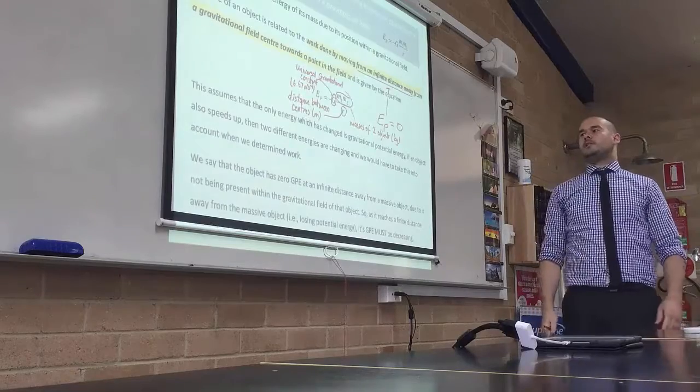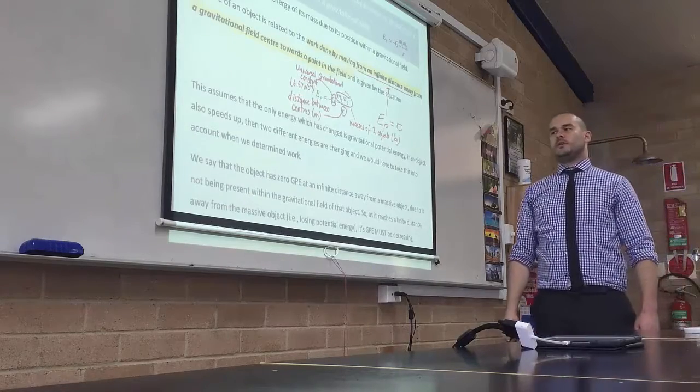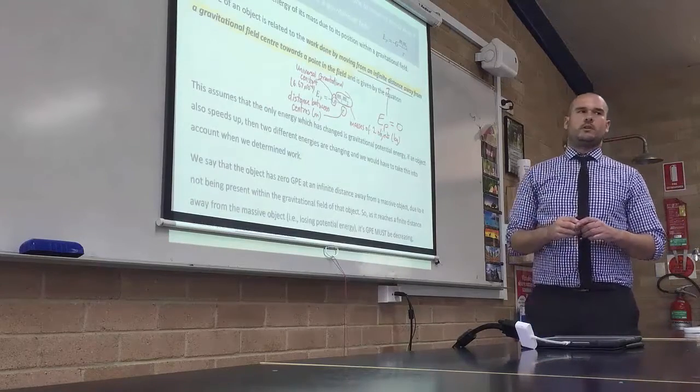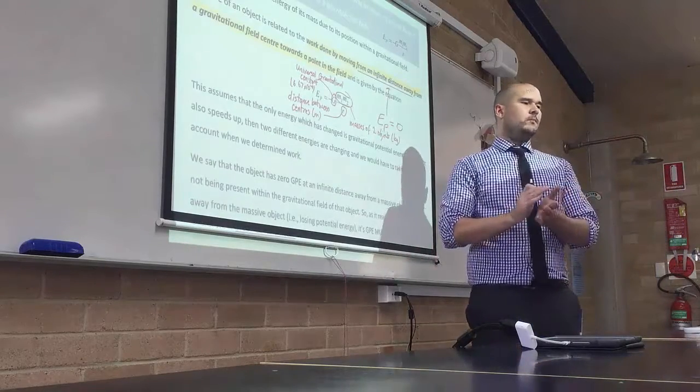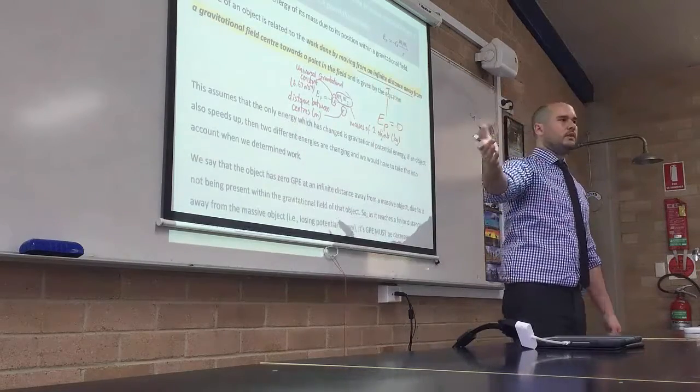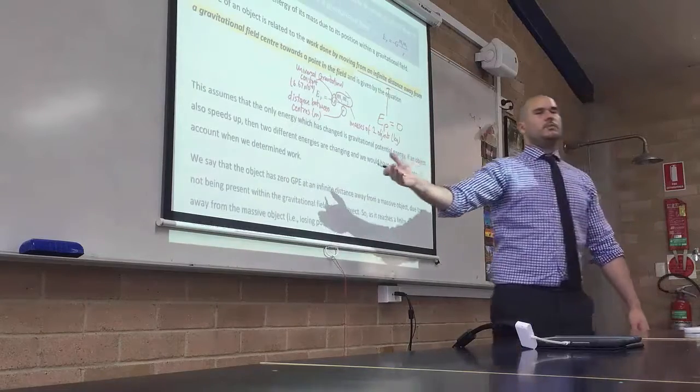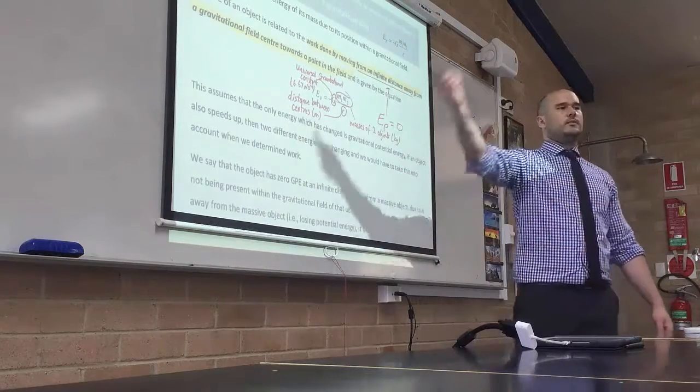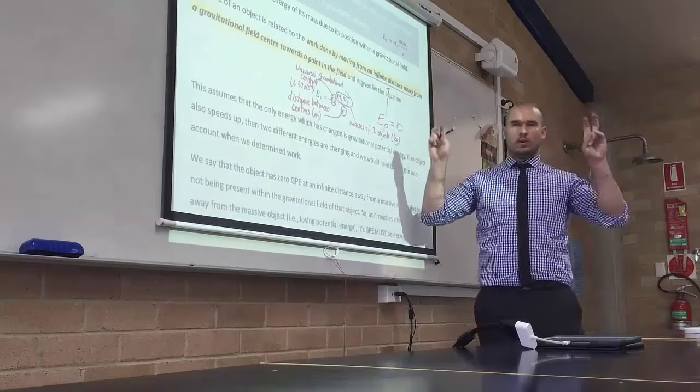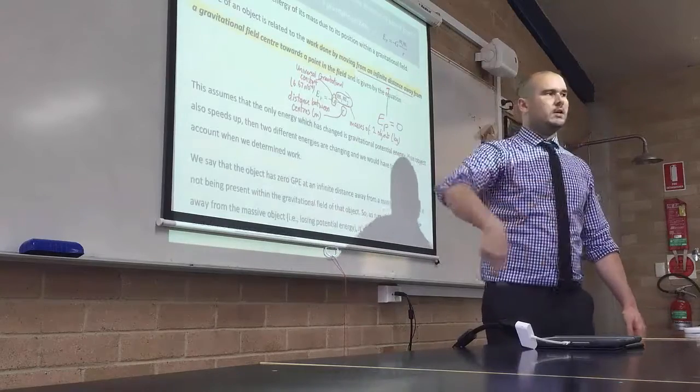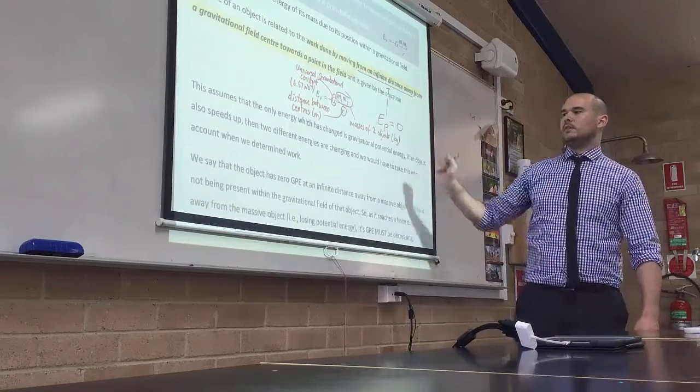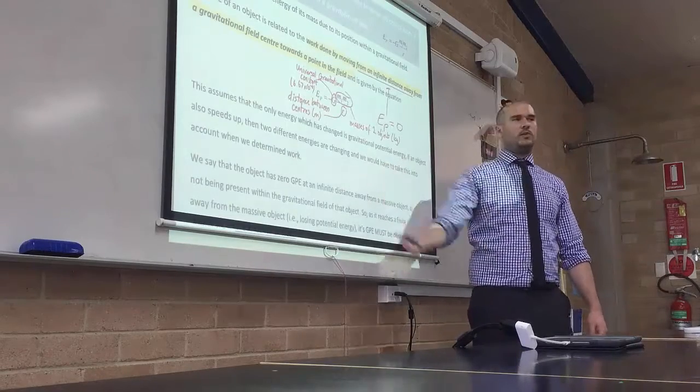So it says this assumes that the only energy which has changed is GPE. If an object also speeds up, two different energies are changing. We have to take that into account when we determine work. So that's why, say if I put a satellite, put an object at an altitude of 10,000 kilometres or something, it will take a certain amount of energy to get it there. But then if I want to put it into orbit, what other type of energy do I need to give it? Kinetic energy. So it requires more work to be done to place an object into orbit than it does just to get the object there in the first place. We have to take that into account on which way to really determine how much work was done on the object.